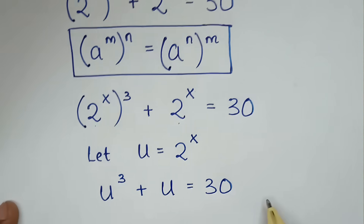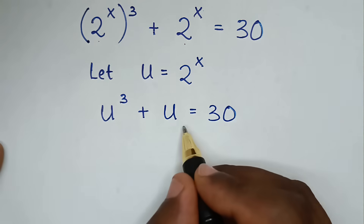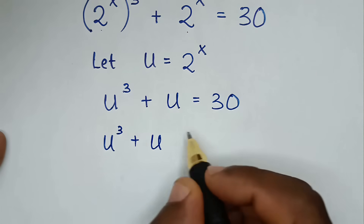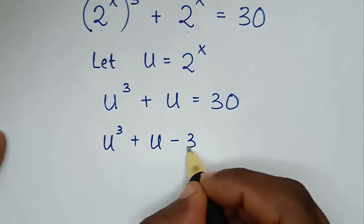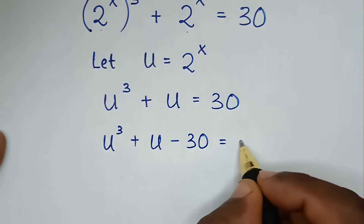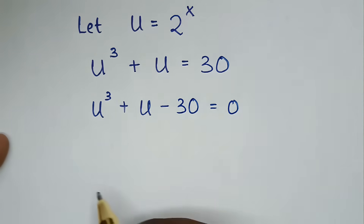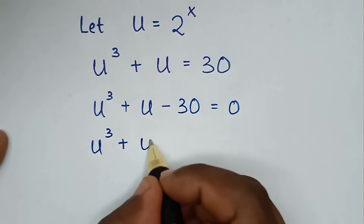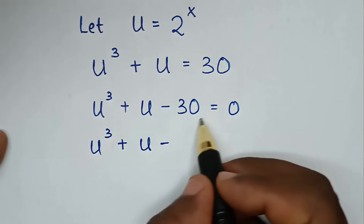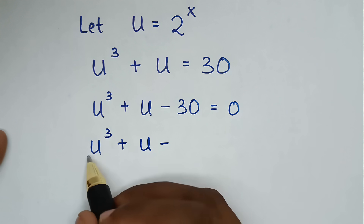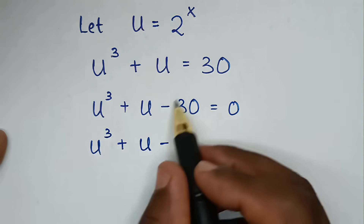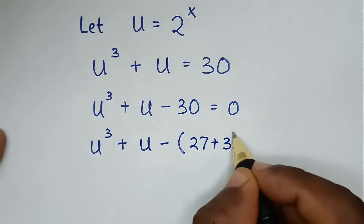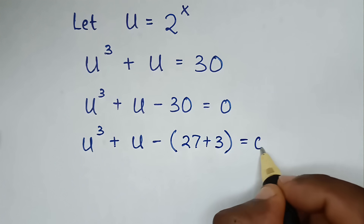We take 30 to the left side, so it will be u³ + u - 30 = 0. We split 30 according to the two exponents: 30 is the same as 27 + 3, so u³ + u - 27 - 3 = 0.